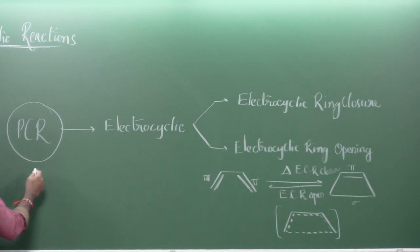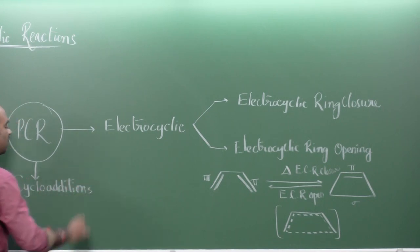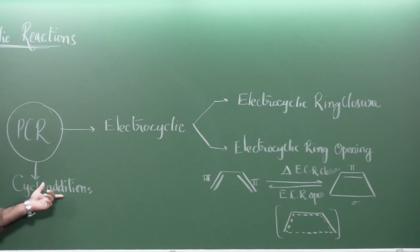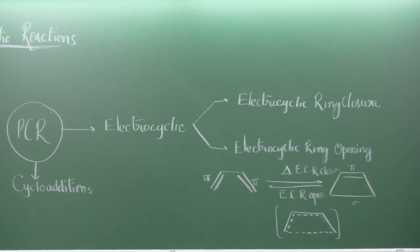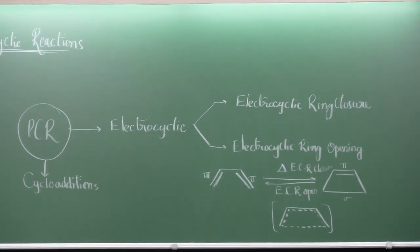The next type of pericyclic reaction is cycloadditions. Similar to electrocyclic reactions, cycloaddition reactions are also of two types. In cycloaddition, two individual unsaturated systems reorganize their pi electrons to form a cyclic molecule. The reverse — where a cyclic molecule gives two unsaturated systems via the cyclic transition state — is called cyclo reversion.